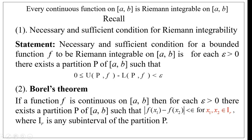Borel's theorem states: if a function f is continuous on the closed interval [a, b], then for each ε > 0, there exists a partition P of [a, b] such that |f(x₁) − f(x₂)| < ε for x₁, x₂ belonging to Iᵣ, where Iᵣ is any subinterval of the partition P. The important point is that x₁ and x₂ must belong to the same subinterval of the partition P.